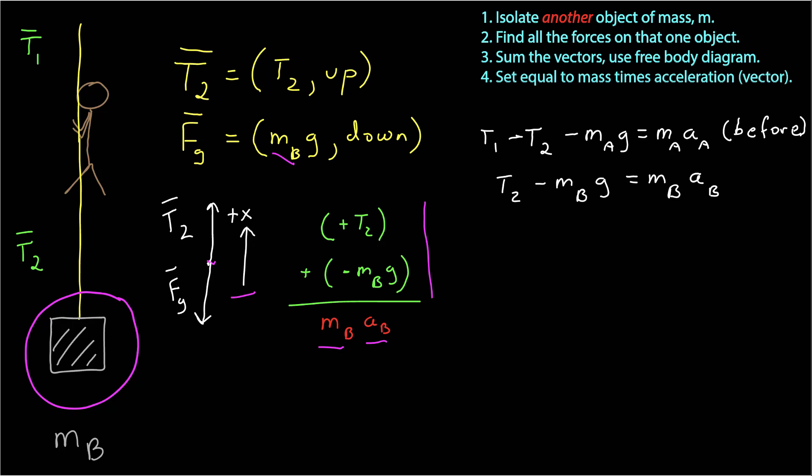Does this give me enough to solve the problem? I have the equation for Alice and now a new equation for the box. I know T1, m sub a, and m sub b — the box is 20 kilograms — and I know g. I don't know T2 and I don't know the acceleration of Alice or the box. So I have two equations but three unknowns. I need a relationship between the accelerations from the context of the problem.